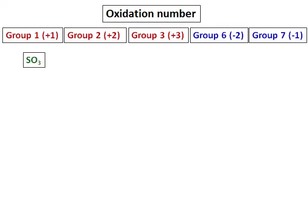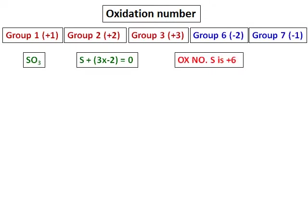Let us consider a compound SO3 and we need to find out the oxidation number for sulfur. The oxidation number of oxygen in SO3 is negative 2 because it belongs to group 6. The way we calculate this: let the oxidation number for sulfur be S, then S plus 3 times negative 2 — because each oxygen has an oxidation number of negative 2 — equals 0, because the total compound is neutral. When you solve this, you get the oxidation number of sulfur as positive 6. This is the way we calculate the oxidation number.